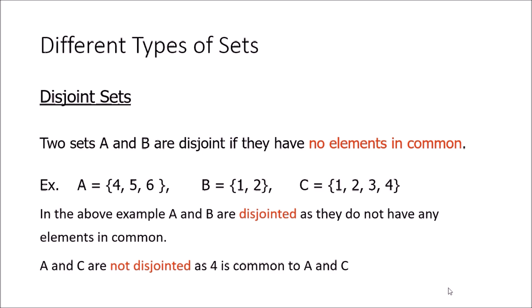Next are disjoint sets. Two sets A and B are disjoint if they have no elements in common. For example, A = {4, 5, 6}, B = {1, 2}, C = {1, 2, 3, 4}. A and B are disjoint since they share no elements. But A and C are not disjoint because the element 4 is common to both — any shared element means the sets are not disjoint.